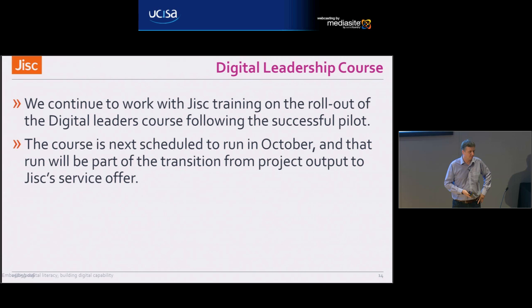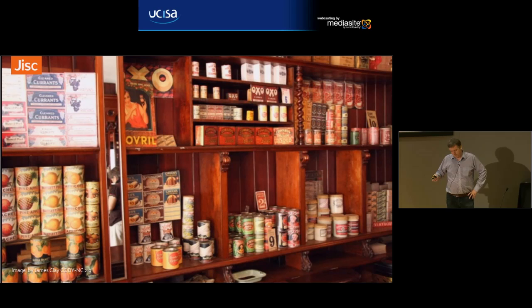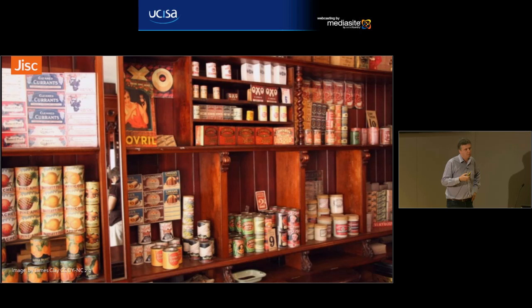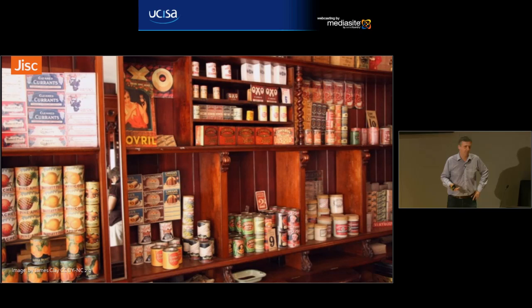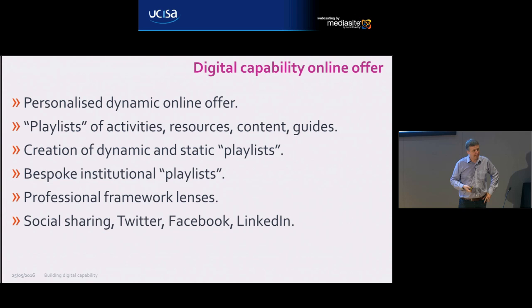Once you go through the discovery tool, work out where you are in terms of digital capability, and get some feedback but want to do a bit more, one of the things we are working on is providing an online offer — best described as a playlist of activities, resources, content and guides appropriate to you as an individual and your level of digital capability for each of the six elements.